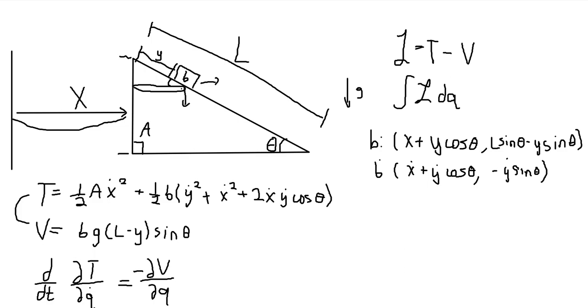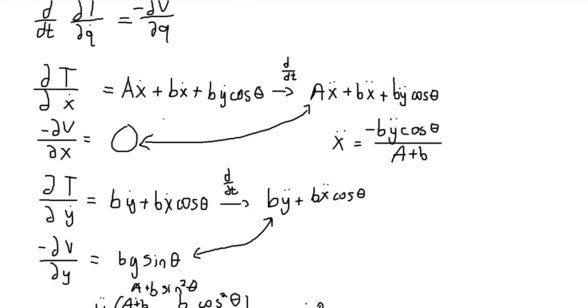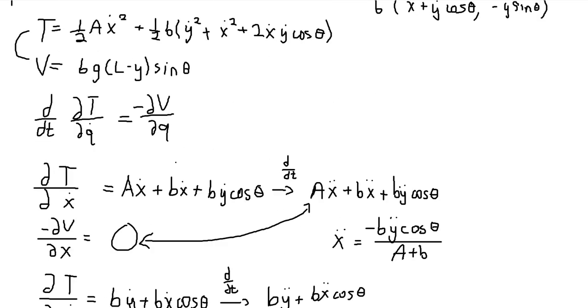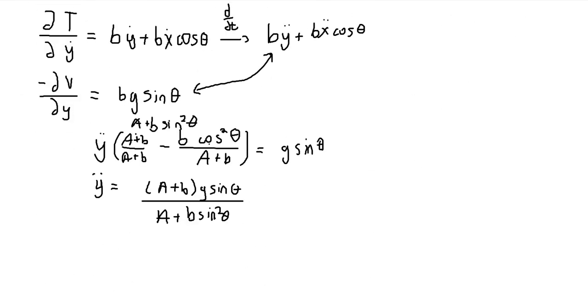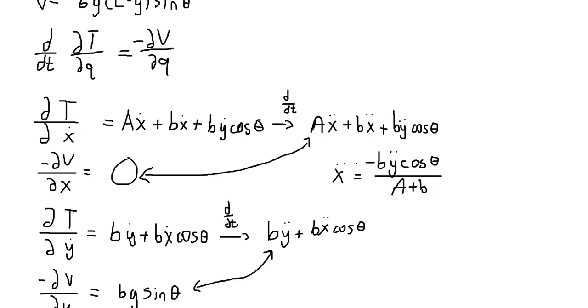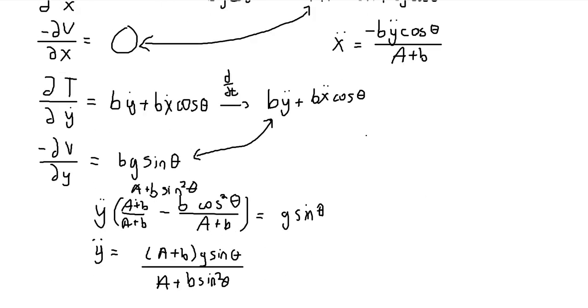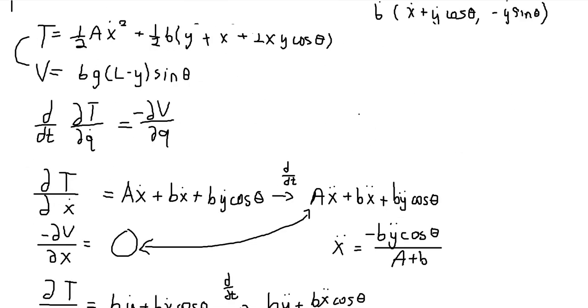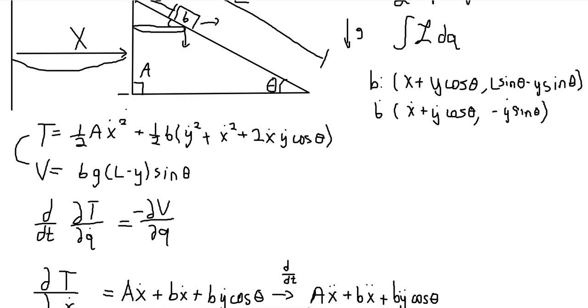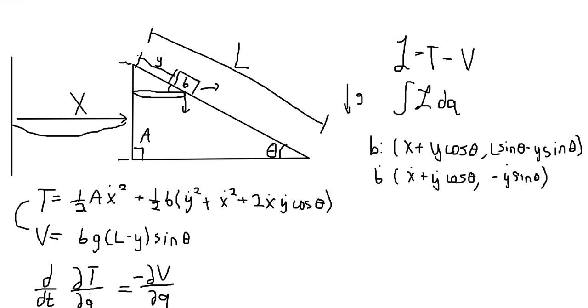It's really, it isn't that bad once you lay down sort of what the potential and kinetic have to be, and then you just take some derivatives and solve, really you're solving a linear equation, two equations, two unknowns. So it's not that hard once you get to that point, because taking the derivatives isn't that hard either. But that's sort of the power of Lagrangian mechanics, as compared to normal Newtonian methods.